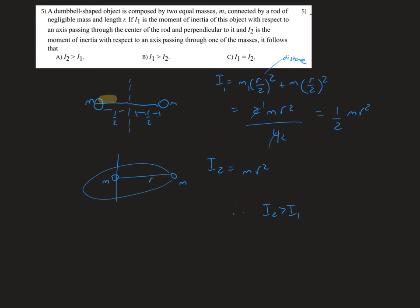Now to understand this better, this whole length is represented as the letter r, so that means the distance from this side to the center of the rod is going to be half of r, and the same thing is going to apply in this case, r over 2.